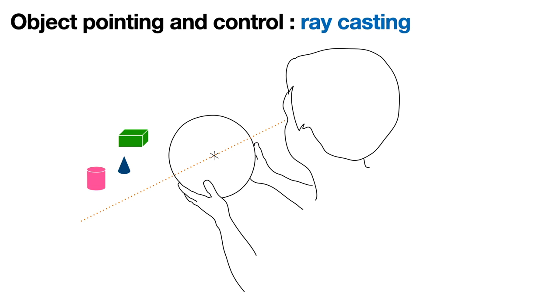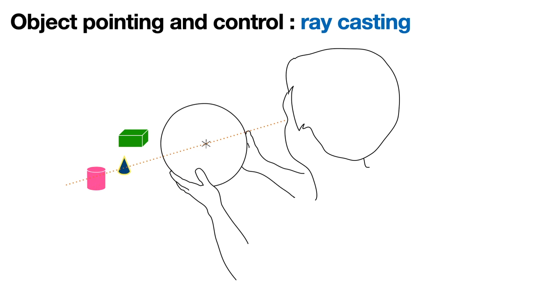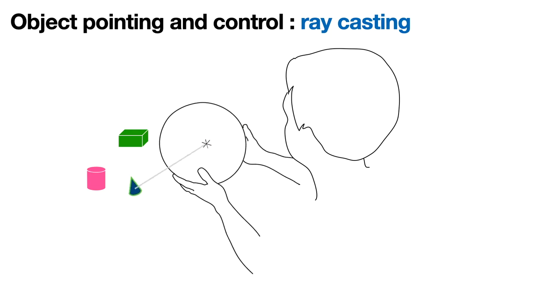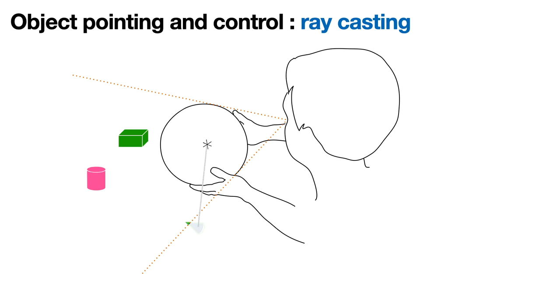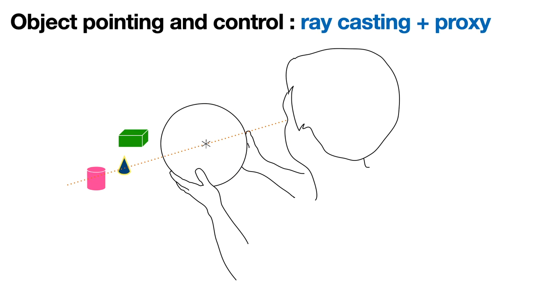For far away objects, we experimented with ray casting. Users align the pointer with a distant object which becomes pre-selected with an outline. If we attach the object to the display, this creates an unsuitable lever arm effect causing the object to quickly disappear from the display. To alleviate this problem, we designed two different pointer behaviors.